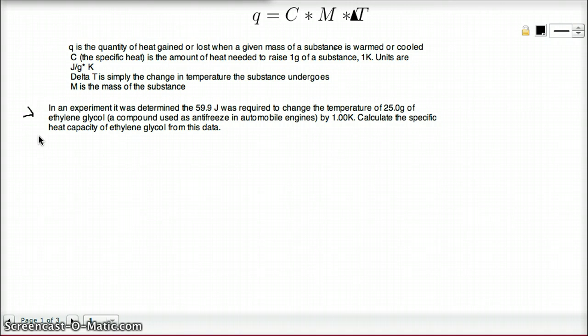So let's just make a list of what we know, and then we can see how we can solve. So we want to find C, the specific heat. Well, do we have three other variables so we can solve for the fourth? Let's see.